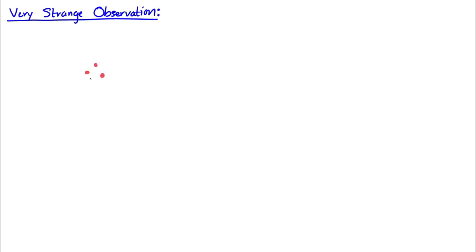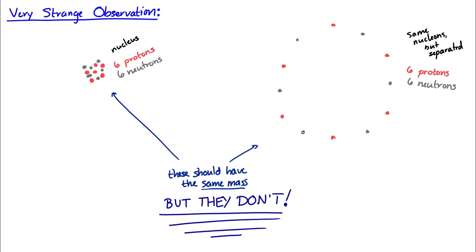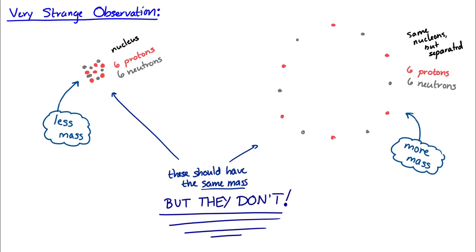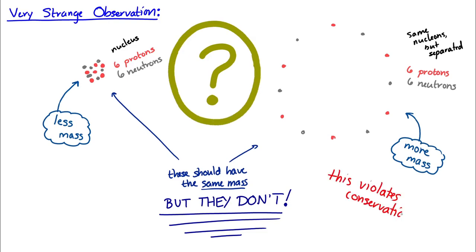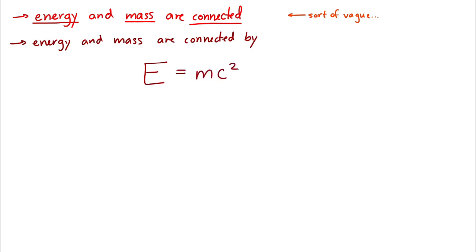How do we calculate binding energy? There's a very strange observation about nuclei. If you take a nucleus made of a certain number of nucleons and compare its mass to those same nucleons when separated, you'd expect them to have the same mass. But they don't. Six protons and six neutrons inside a nucleus have less combined mass than six protons and six neutrons that are separated. This violates conservation of mass, and it happens because energy and mass are connected.